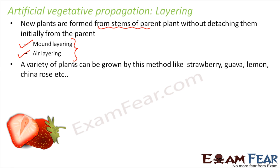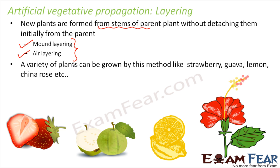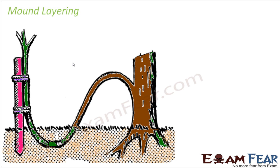Both of these methods can be applied to a variety of plants. For example, strawberry, guava, lemon, and china rose. These are all common examples of plants which are artificially reproduced using the method of layering. So let us look at mound layering.